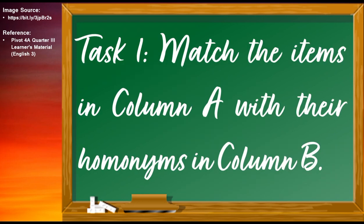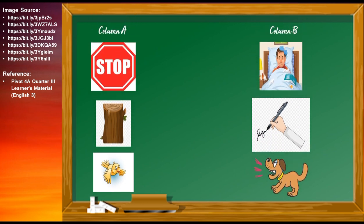For our first task, I want you to match the items in column A with their homonyms in column B. For the first item, we have the STOP sign and its homonym in column B is the picture which shows us sign or signature. The second item in column A is the bark of a tree and its homonym in column B is the bark of a dog.